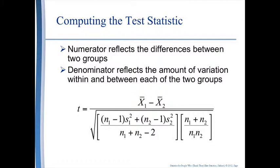Like we saw in the chapter on the z-test, the numerator at the top of this fraction compares the differences between two groups based on the mean. The denominator combines and compares the variance between the groups. Admittedly, calculating a t-value is just a bit more complicated than the z-score. Student, aka Gossett, must have been packing away the Guinness Stout when he was working on calculating this one.